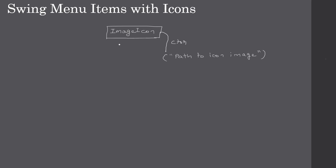First we will create an ImageIcon — to the constructor we will pass the path to the image file. Once the ImageIcon is ready, we go and create a JMenuItem. We pass the title, for example 'File Open' or 'Save', and then the ImageIcon — for open it will be an icon representing opening a file.